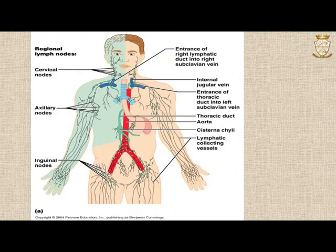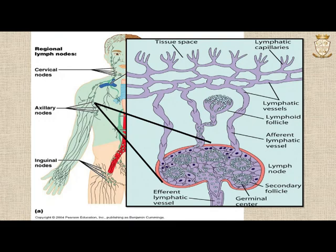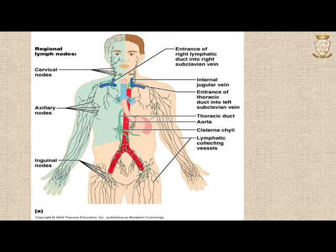From the tiny lymphatic capillaries, lymph flows into progressively larger collecting vessels known as lymphatic vessels and reaches the lymph nodes — such as cervical, axillary, and inguinal nodes. Lymph enters lymph nodes through afferent lymphatic vessels and leaves through efferent lymphatic vessels, eventually draining into the circulatory system at the thoracic duct or right lymphatic duct, which empties into the left subclavian vein near the heart. The lymph leaving the lymph node is richer in lymphocytes and more immunologically enriched.